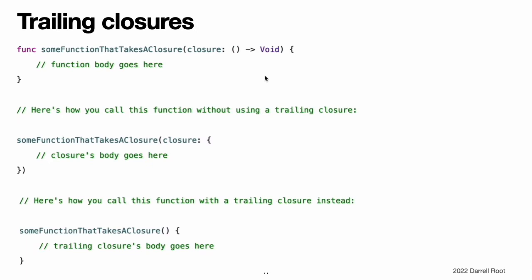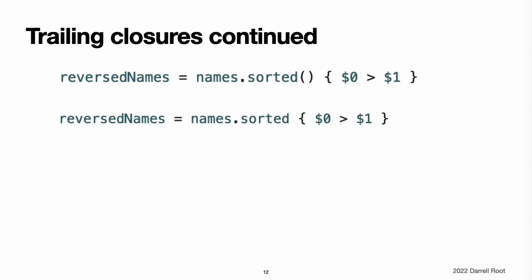If you need to pass a closure expression to a function as the function's final argument and the closure expression is long, it can be useful to write it as a trailing closure instead. You write a trailing closure after the function call's parentheses, even though the trailing closure is still an argument to the function. When you use the trailing closure syntax, you do not write the argument label for the first closure as part of the function call. A function call can include multiple trailing closures. However, the first few examples below use a single trailing closure.